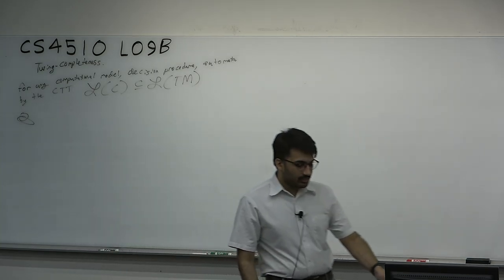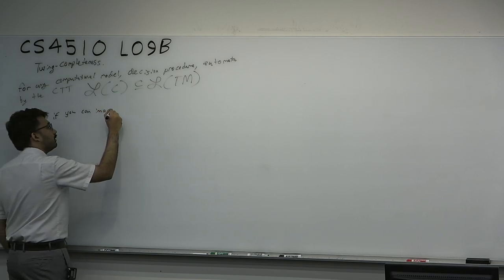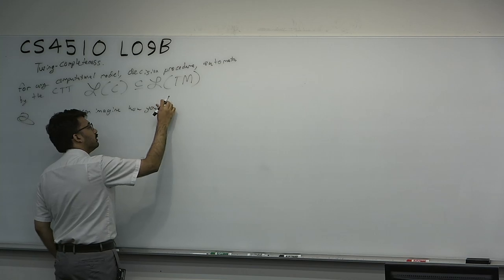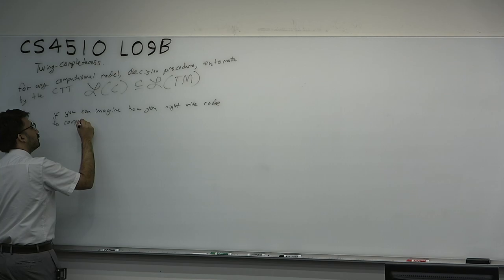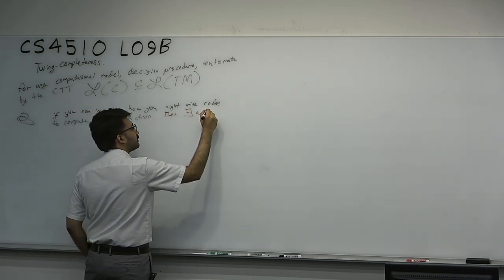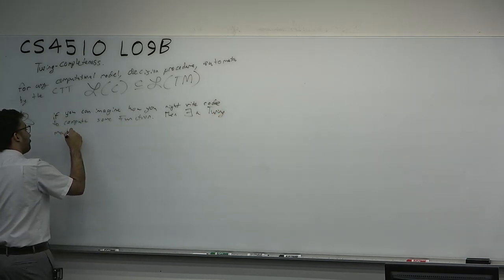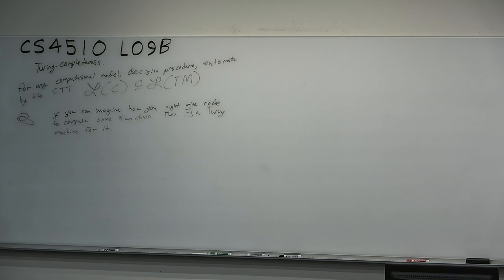Another thing the Church-Turing thesis says is that you don't have to be a programmer. If you can imagine how you might write code to compute some function, then there exists a Turing machine for it. So if you can just imagine how you might program something — if you can reasonably think about an algorithm — then you can just say that there exists a Turing machine for this algorithm. You would take the idea of your algorithm, convert it using Turing's direct appeal to intuition to a Turing machine, and then voilà, you have a Turing machine.